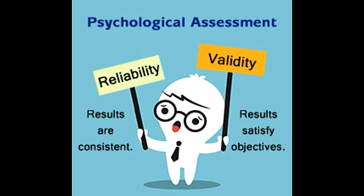This Buzzle post explores these properties and explains them with the help of examples. Reliability and validity are key concepts in the field of psychometrics, which is the study of theories and techniques involved in psychological measurement or assessment.